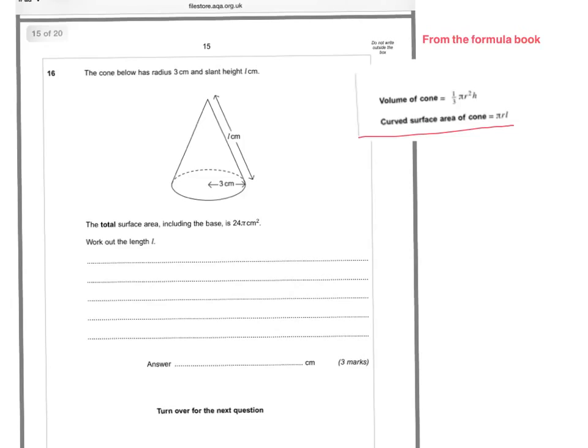So looking in the question, we've got pi times the radius, which in the question is 3, and then times L, which we haven't been given, so we can just leave that as L. Now we can simplify this and that would just give us 3 pi L. And that just means we've dealt with this part of the question.